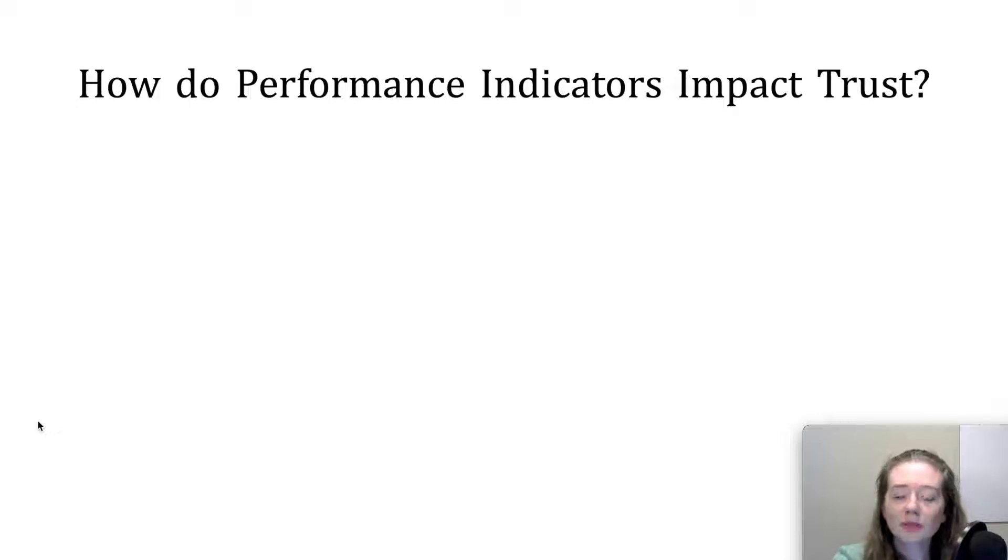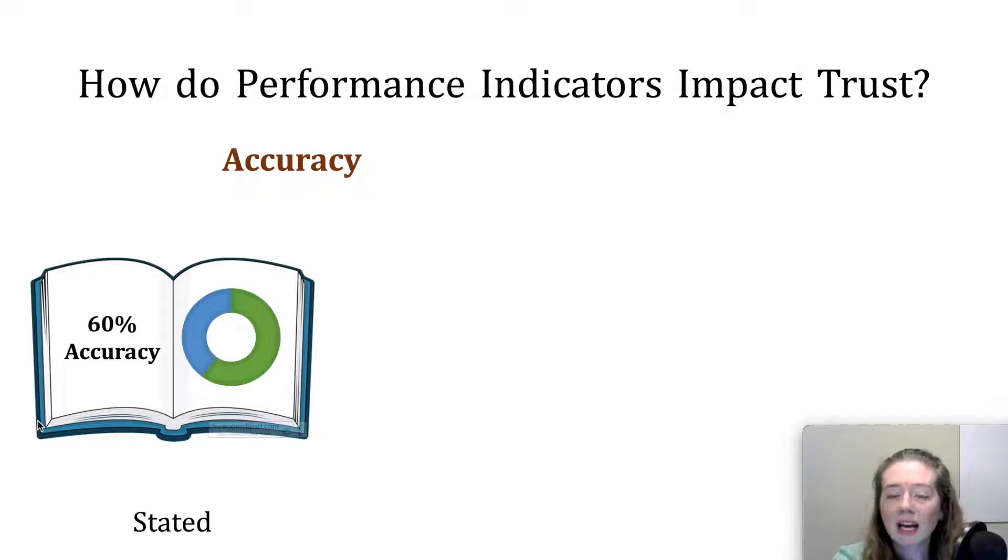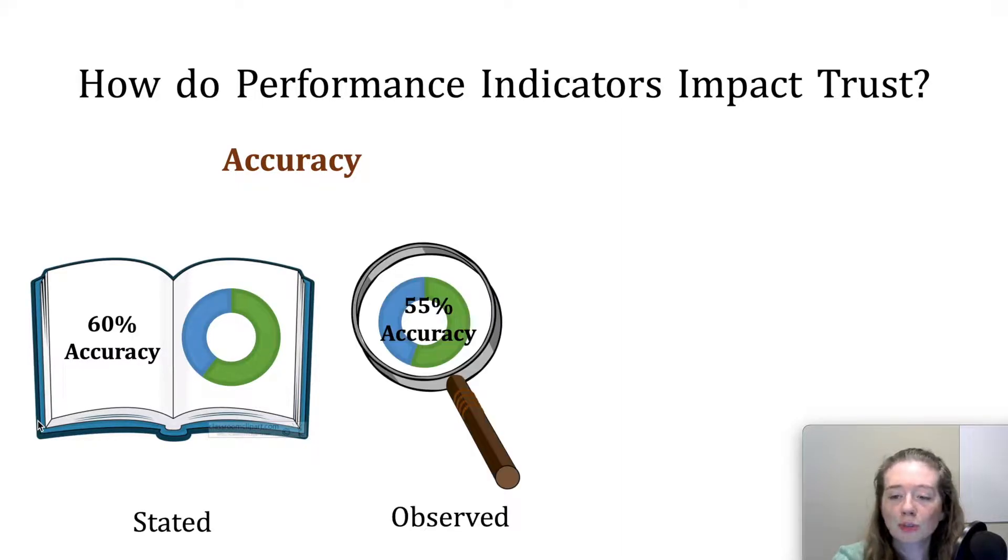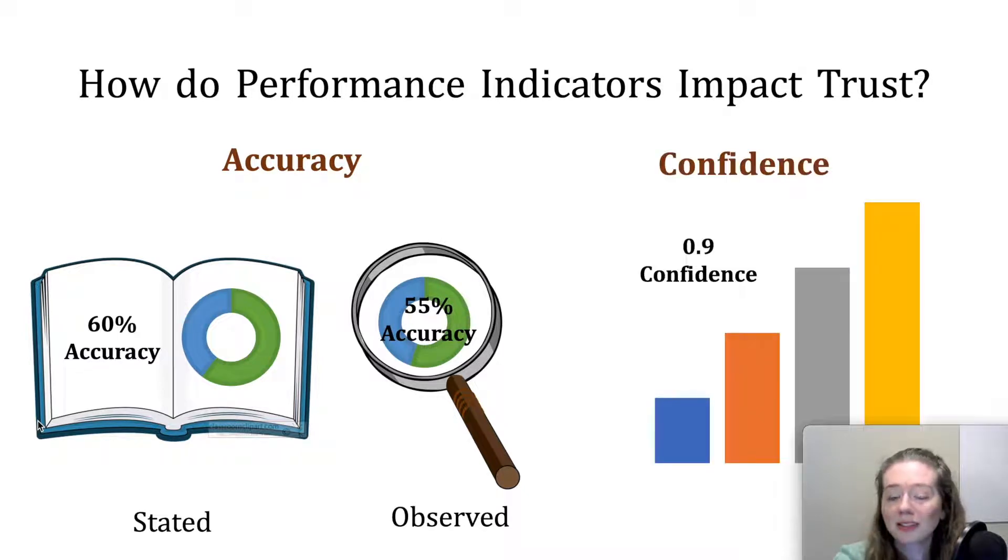Prior literature has found that the accuracy of a model, both in terms of a stated accuracy on some held out data and its observed accuracy in practice, along with the confidence that a model associates with its predictions, are factors impacting users' trust in the model's decisions. What remains underexplored, however, is what impact multiple performance indicators together would have on people's trust in these models.